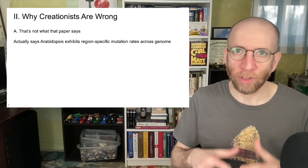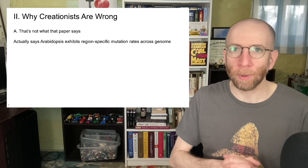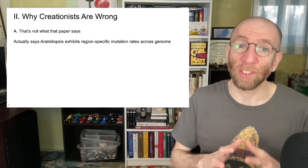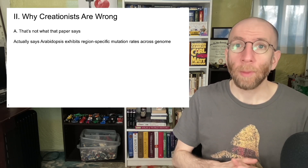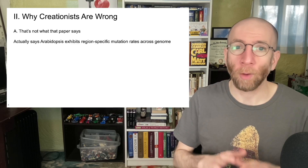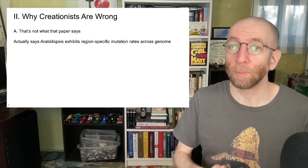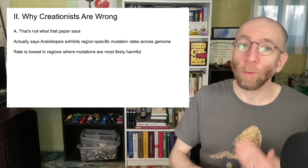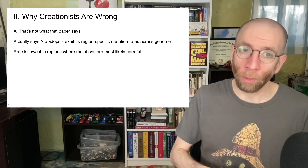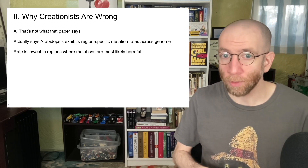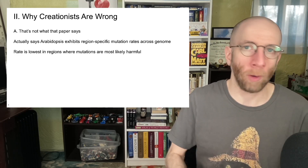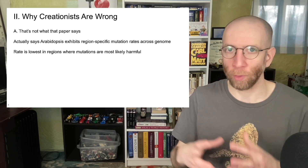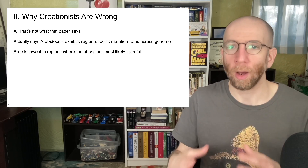Natural selection is a non-random mechanism of evolution, so something being non-random does not preclude evolutionary theory or evolutionary processes. But that's beyond the scope of what we're talking about here. Why are creationists wrong about this particular claim and this particular paper? It's actually really simple: that's not what the paper says. The paper says that Arabidopsis exhibits region-specific mutation rates across the genome, and that rate is lowest in regions where mutations are most likely to be harmful — for example, tightly constrained protein-coding regions.